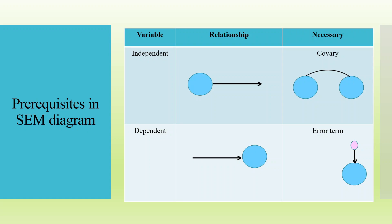Now there are some prerequisites while drawing the CB-SEM in the canvas. If we have an independent variable — identified by arrows moving out from the construct — and we have many independent variables, it is necessary that we co-vary them. The second thing is that if we have a dependent construct, also known as endogenous (independent is exogenous, dependent is endogenous), and the arrow is moving inside, it is necessary that we put the error term on it. So these are the prerequisites in the SEM diagram.